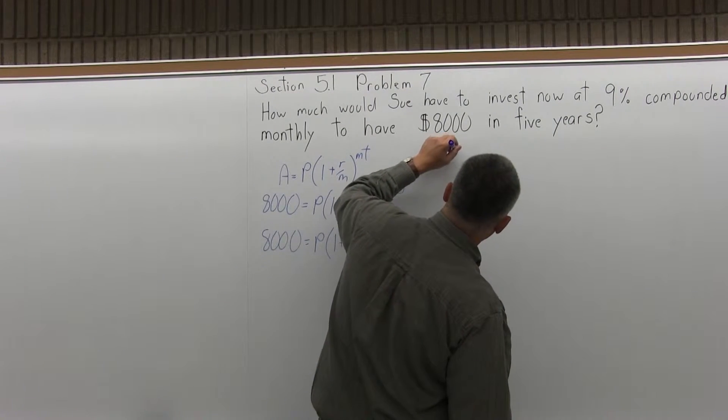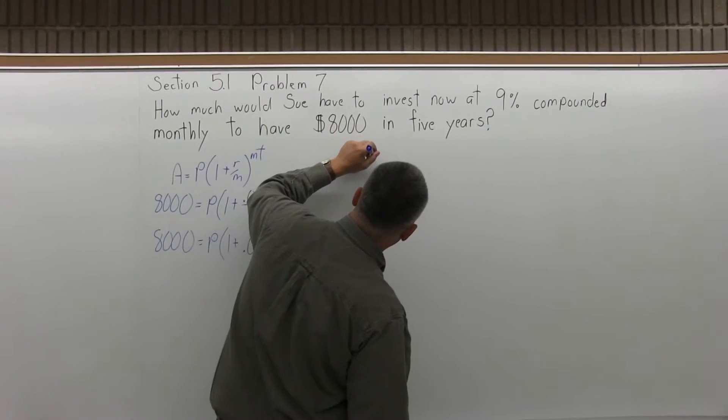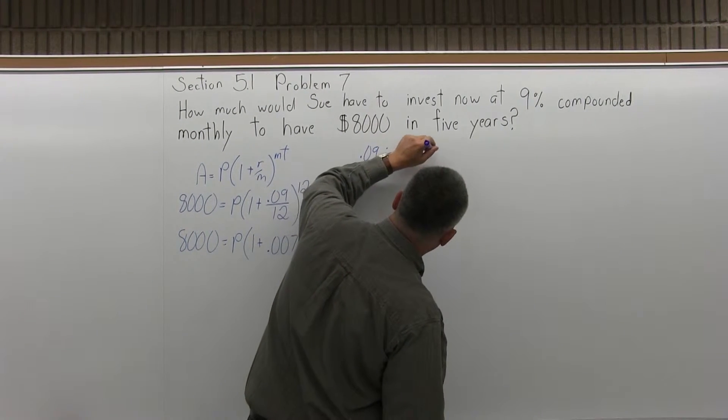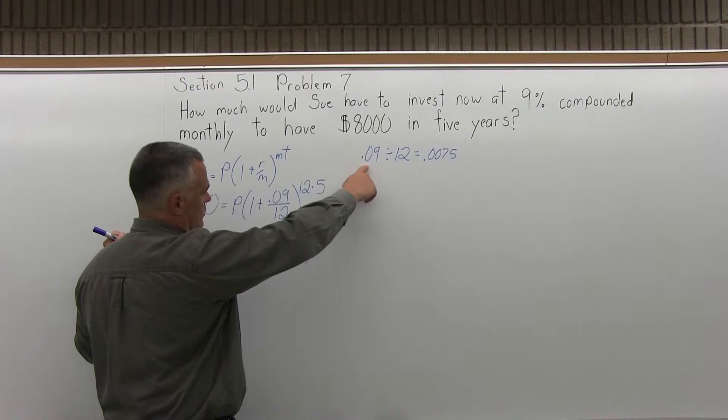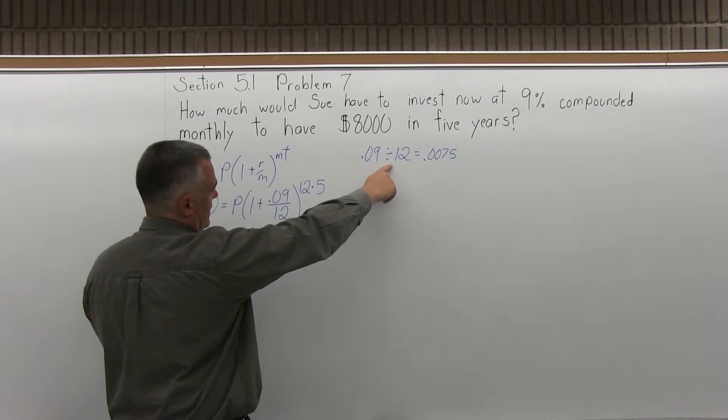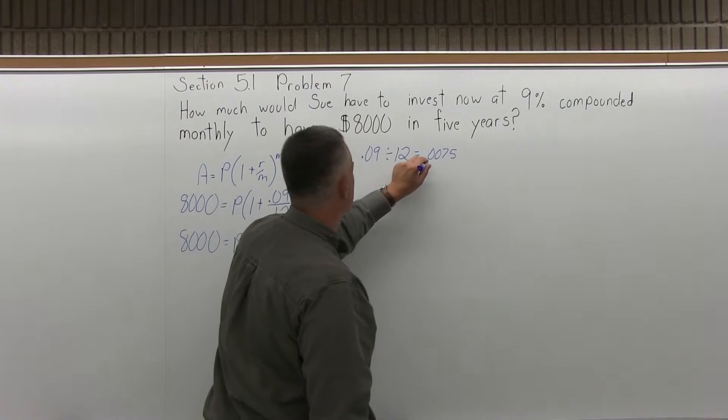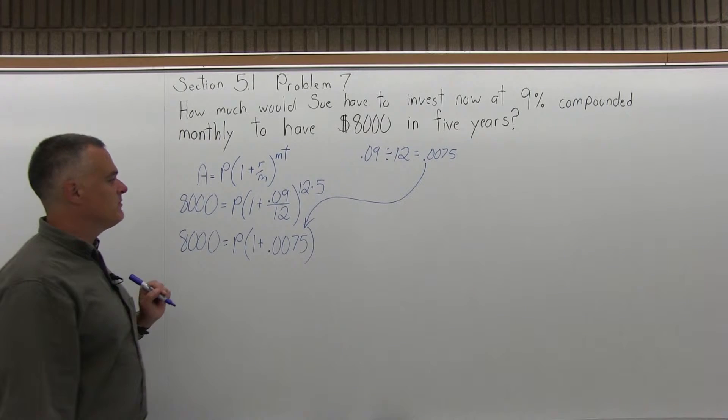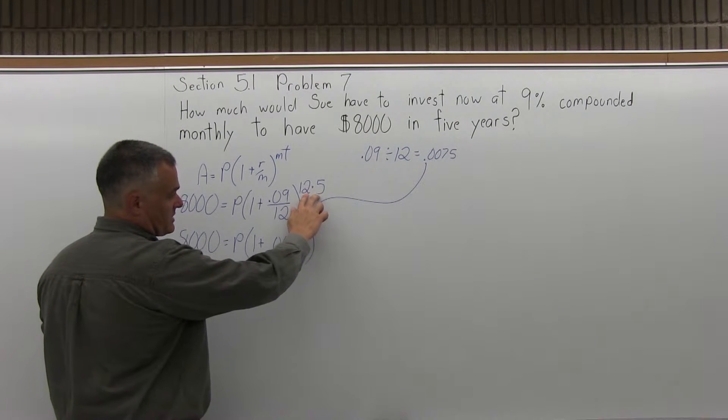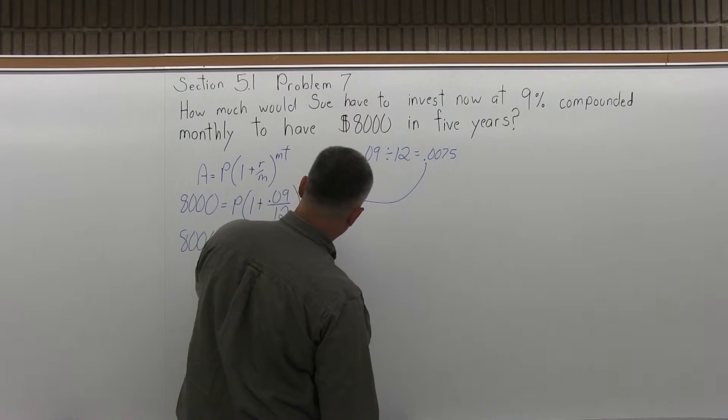Let's say you think that's what it is, but you're not sure. Your calculator will figure it out. You want to put in the numerator of .09, divide by the denominator, 12 equals, and it'll tell you. So that's where the .0075 comes from. The exponent on the parentheses, 12 times 5, I might as well do now, that's 60.